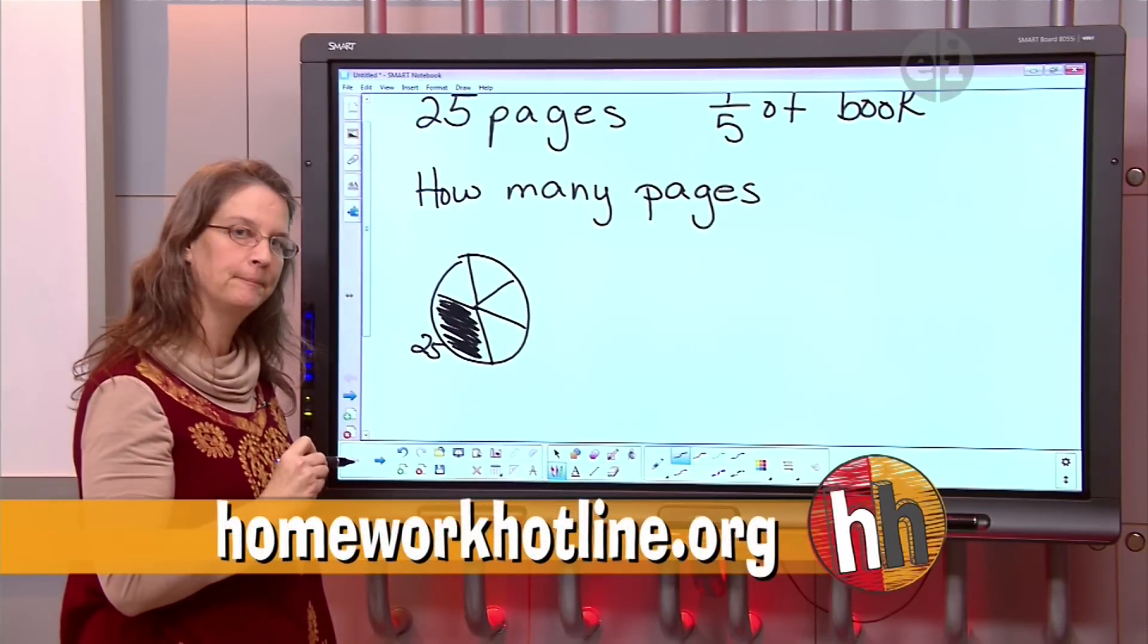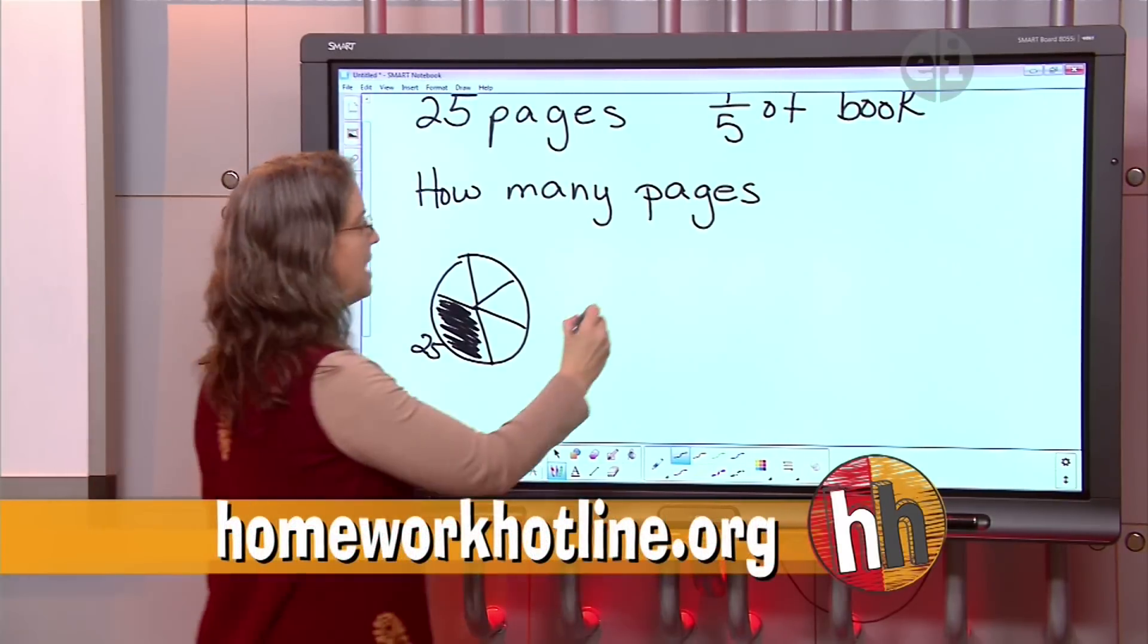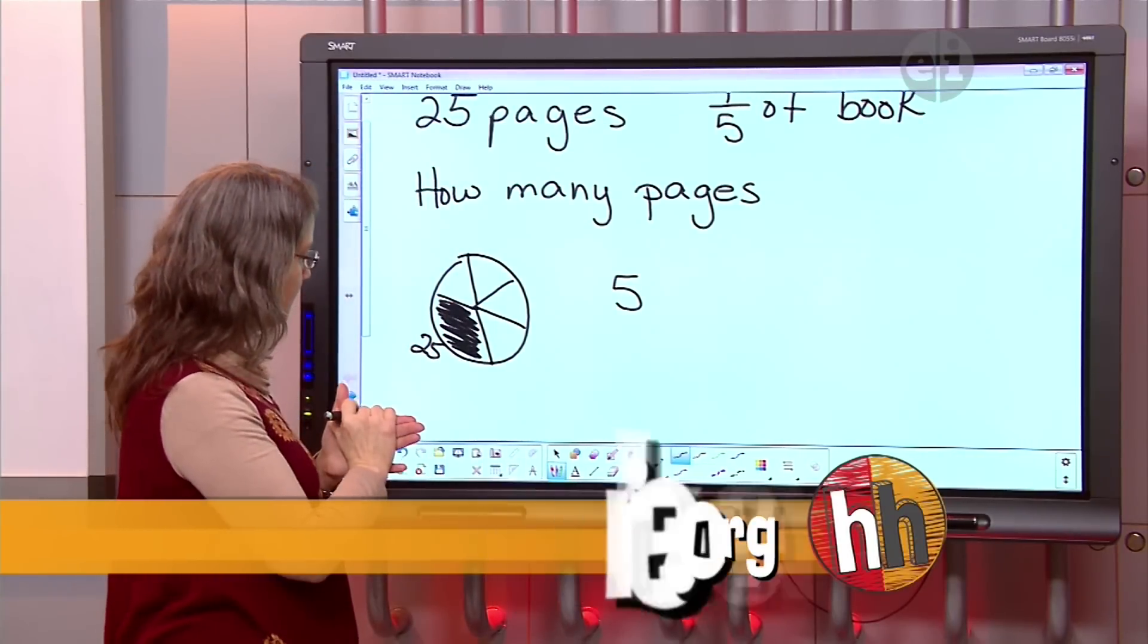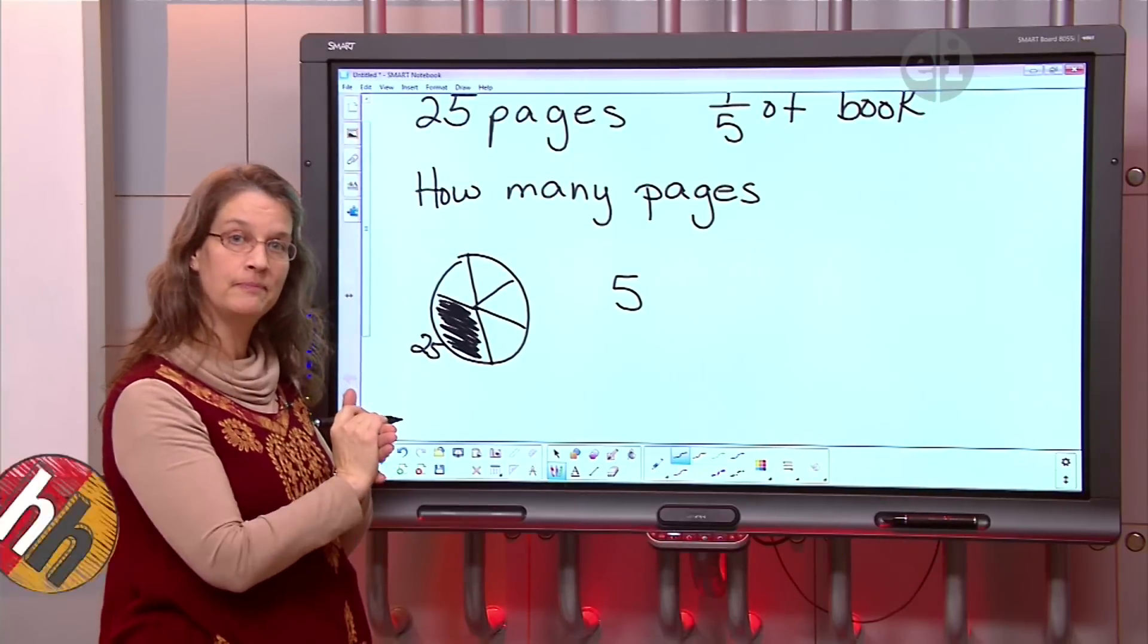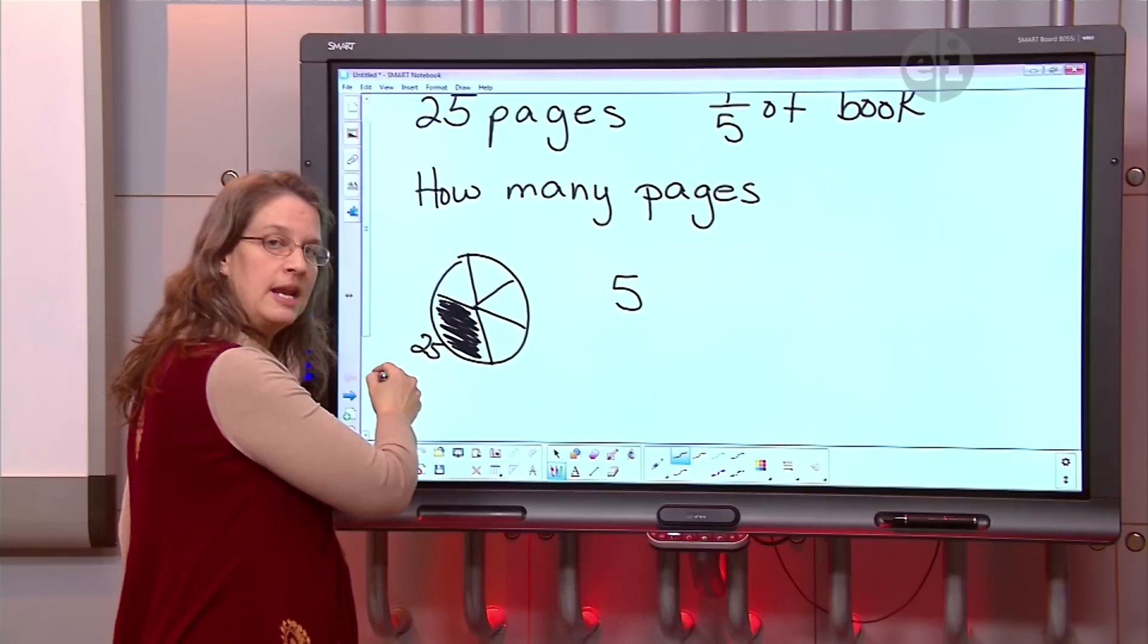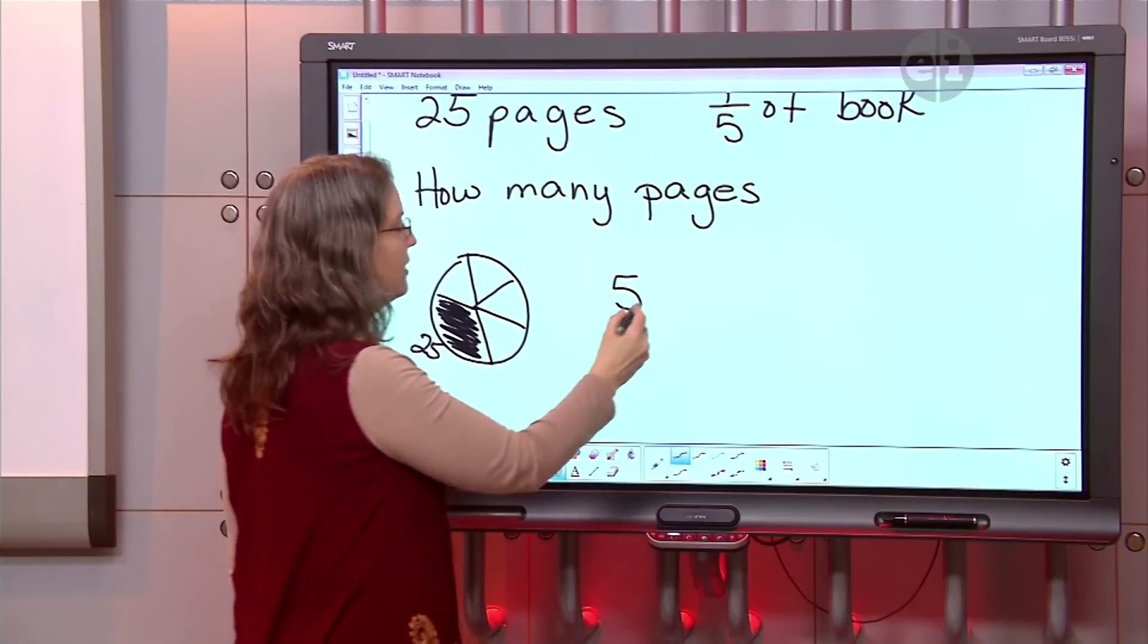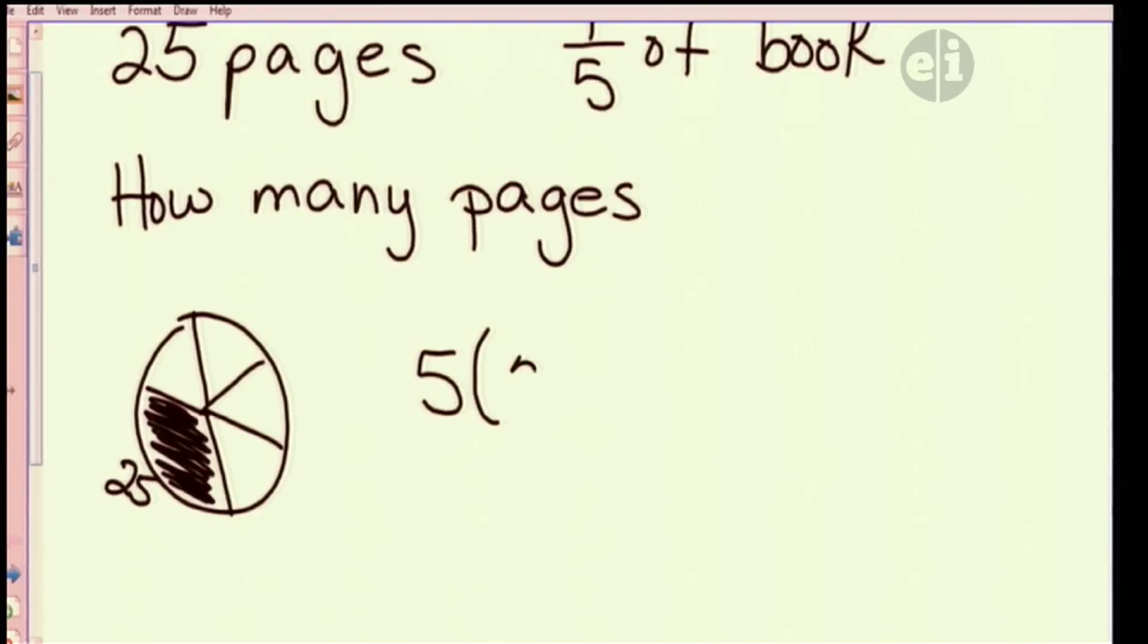Okay. What two numbers do you want to multiply? Five. Five. Because you got five spots. And then what's the other one? How many did you read already? I read 25. You read 25 already. So you're going to do five times 25 to find out how many pages are in that book. All right? So let's do that.